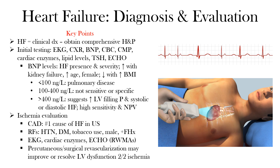An elevated BNP has a sensitivity for heart failure of 95 to 97%, and a negative predictive value of 90 to 97%. That is to say, if the patient does not have an elevated BNP above 400, there's a good chance they don't have heart failure. If the BNP is between 100 and 400, this gets tricky, as concentrations in this range are neither sensitive nor specific for excluding or confirming the diagnosis of heart failure.